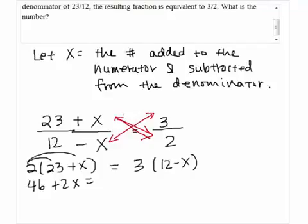By distributing, we have 46 + 2X = 36 - 3X.